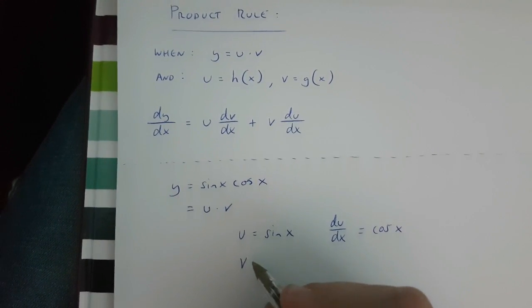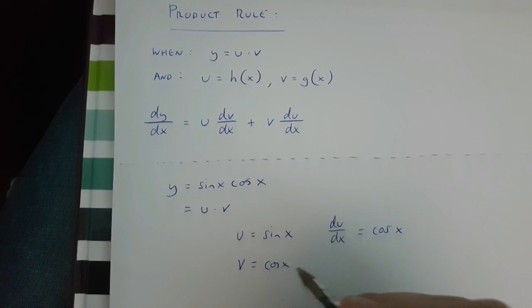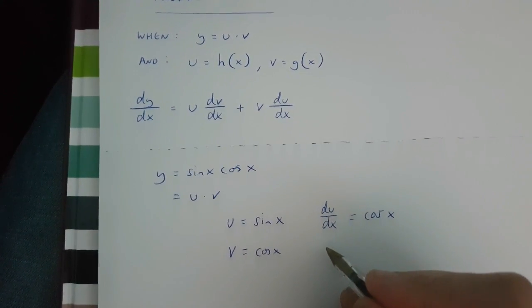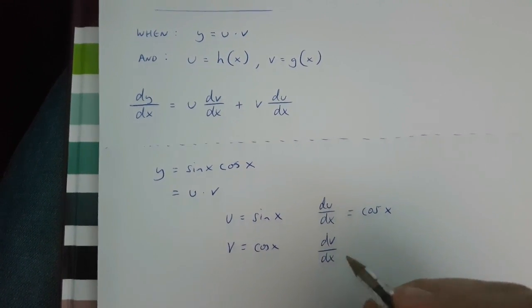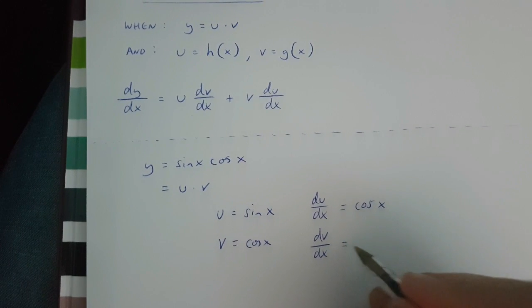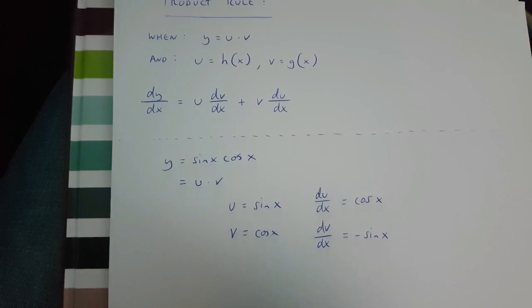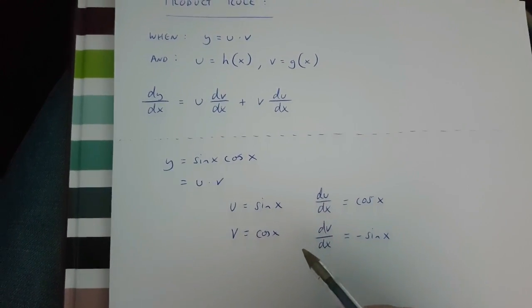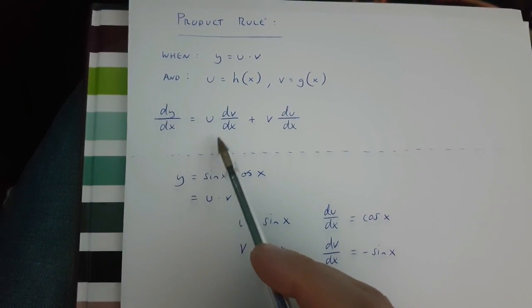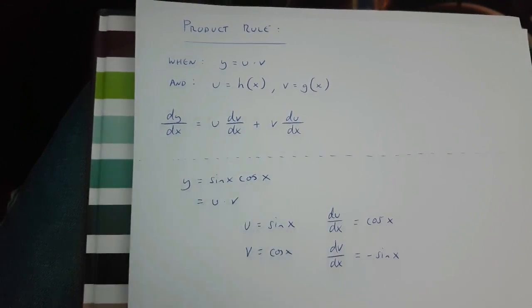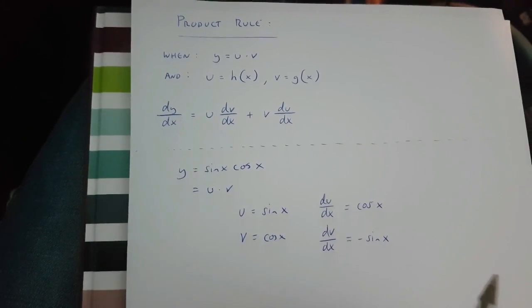If v is cos x, then dv over dx is going to be equal to minus sine x. Now that we've got this information, we can use the product rule to get dy over dx.